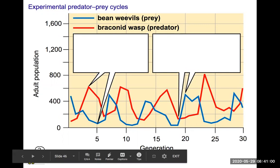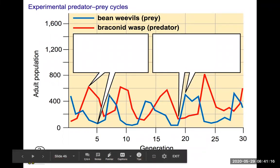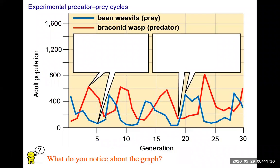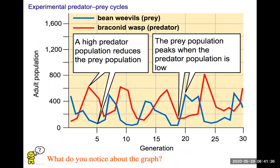As the predator population increases, the prey population decreases. When prey becomes scarce, the predator population also drops. As prey populations recover and become abundant again, predator populations soon follow. This creates a cyclical pattern where both predator and prey populations continuously limit each other's size. This helps sustain the natural environment they both share, preventing either population from destroying it.